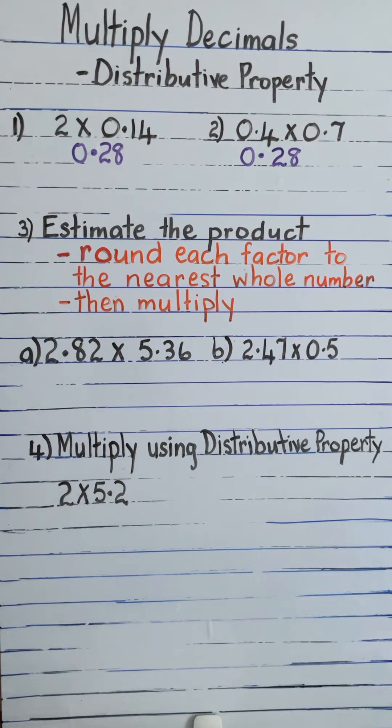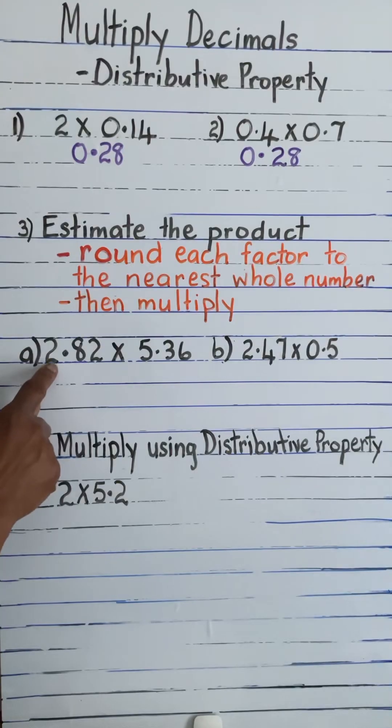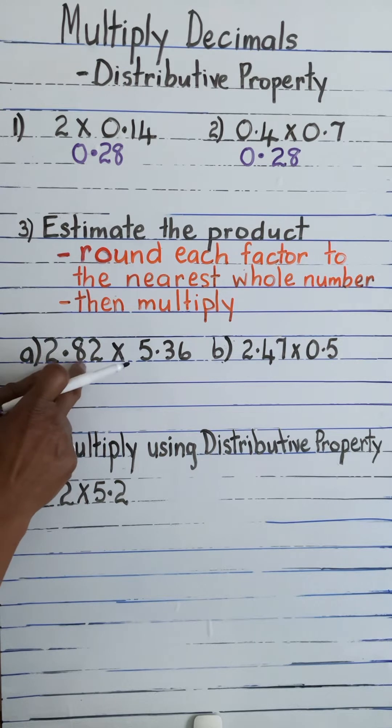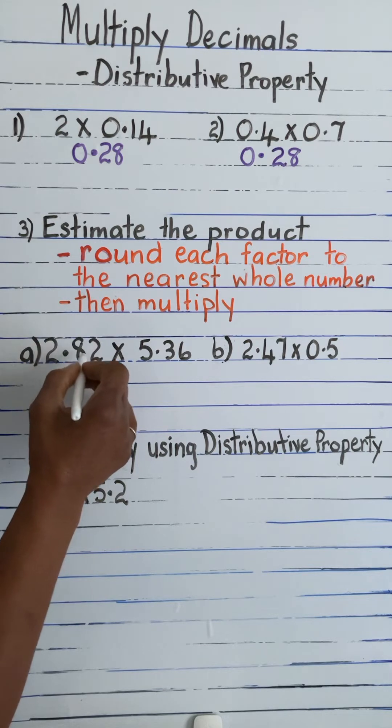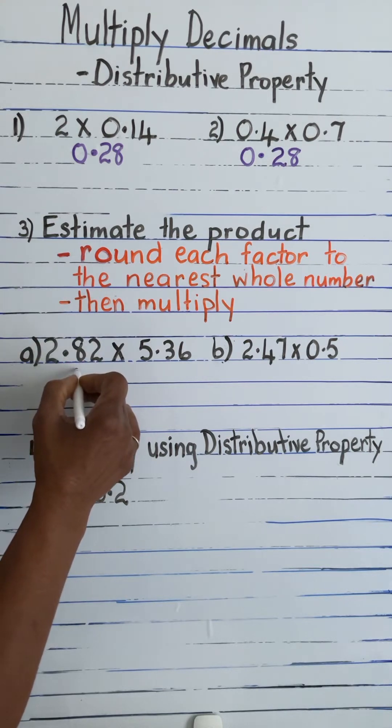Estimate the product. When we are doing this, first we round each factor to the nearest whole number and then we multiply. We have 2.82 times 5.36. We're going to round each factor to the nearest whole number. The next digit is 5 or more, so we're going to round up—that means we add 1 to the rounded number, so 1 plus 2 is 3. So 2.82 is rounded to 3.